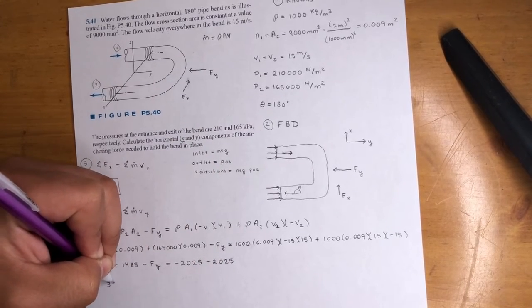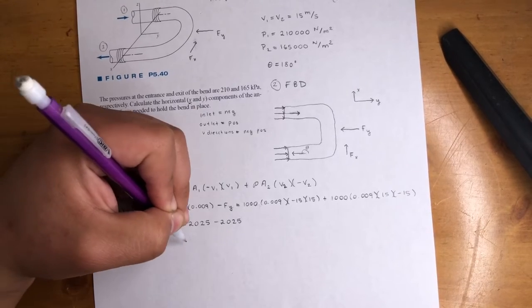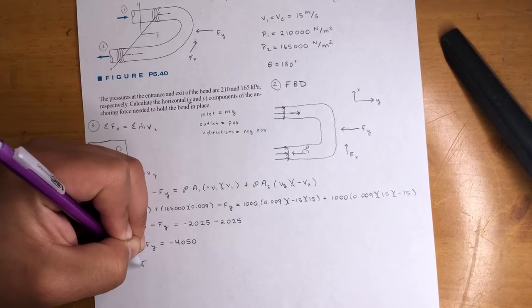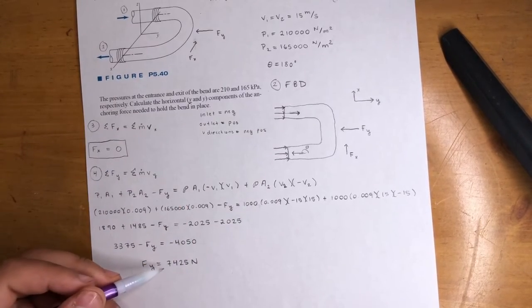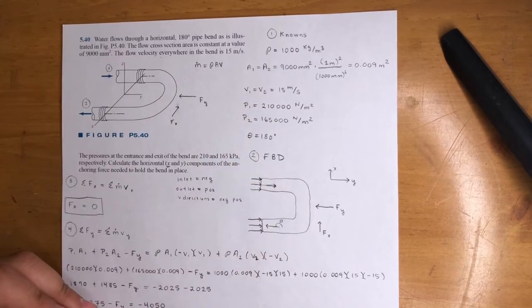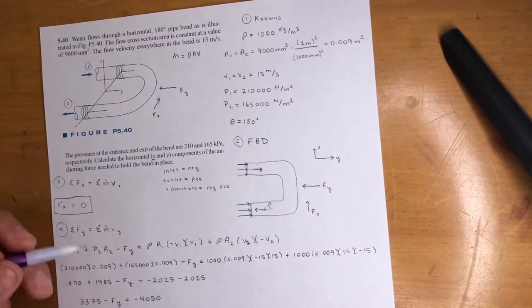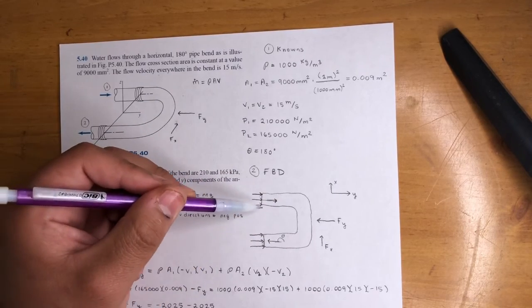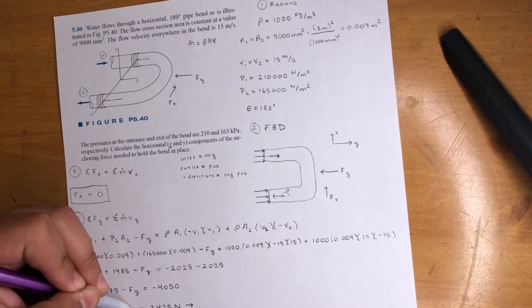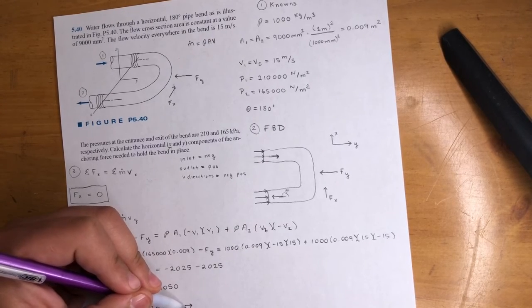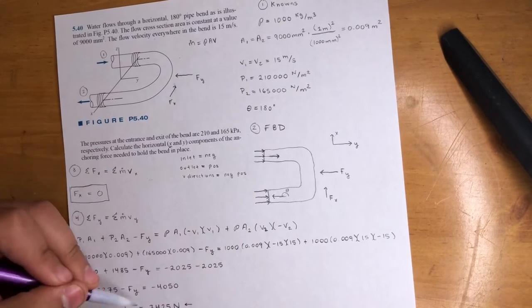If you do the math, you'll get here, 1890 plus 1485 minus FY is equal to negative 2025 minus 2025 again. Do some more math. 3375 minus FY is equal to negative 4050. Do more math. FY is 7425 newtons. So, it's positive, meaning we assumed correctly. If I would have gotten a negative number, all that means is that this force is actually going in the positive Y direction. Now, I kind of use logic. If water is flowing through this pipe and this pipe, I imagine all the force is coming this way. It really doesn't matter. You don't even need to use logic. At the end of the day, it should work itself out. So, that just means F of Y is 7,425 newtons in the negative Y. So, we assume correctly in the negative Y. So, that's the answer.